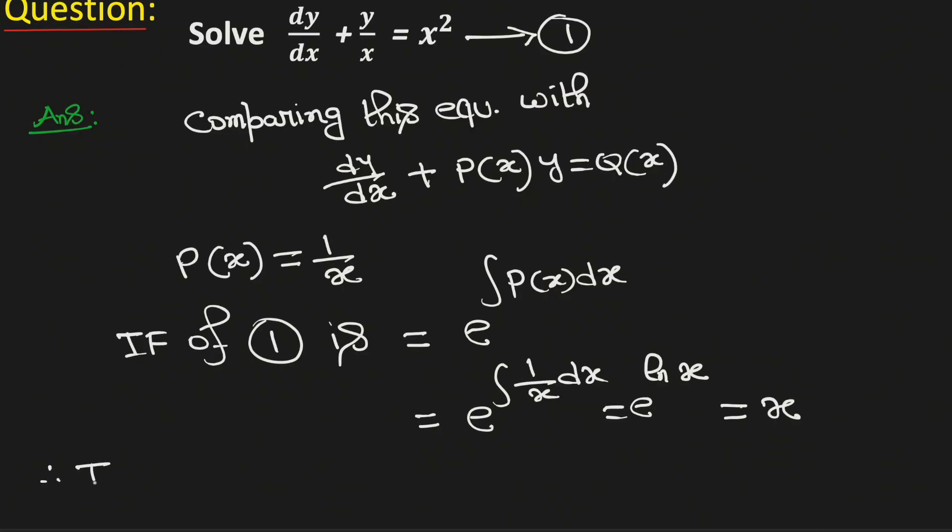Therefore the solution of given equation 1 is y times integrating factor which is x, equals integration of integrating factor which is x, times the function in the right hand side, that is x squared dx, plus integration constant c.